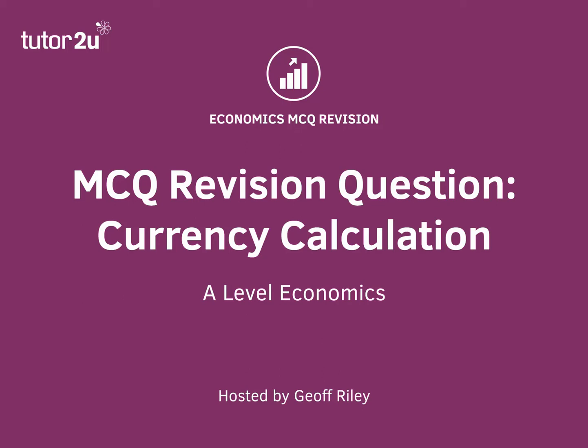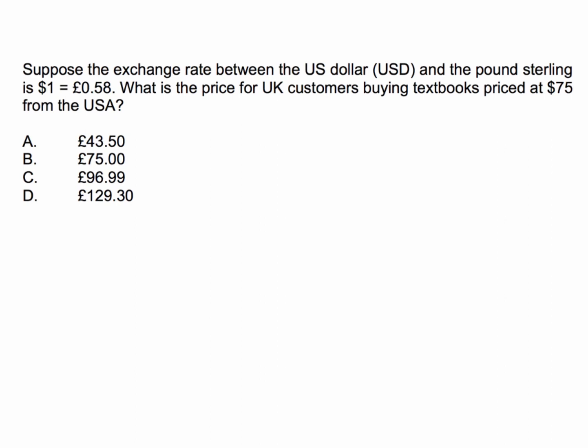Sometimes in exam questions we're asked to make a simple calculation using data. Here's a currency calculation question for you to have a go at. Suppose the exchange rate between the US dollar and the pound sterling is one dollar buys 58 pence. What is the price for UK consumers buying textbooks priced in US dollars? This is a simple exchange rate calculation question — press pause and have a go. I'll be back in a few seconds with the right answer.